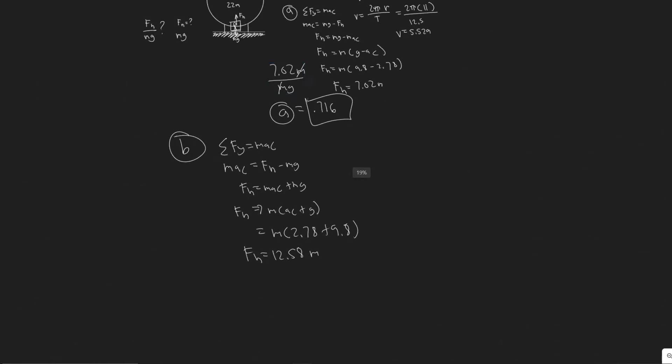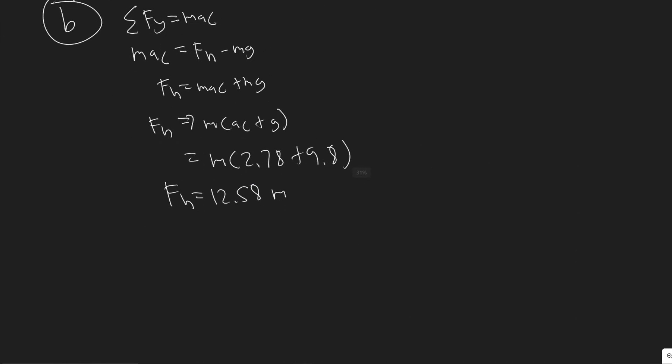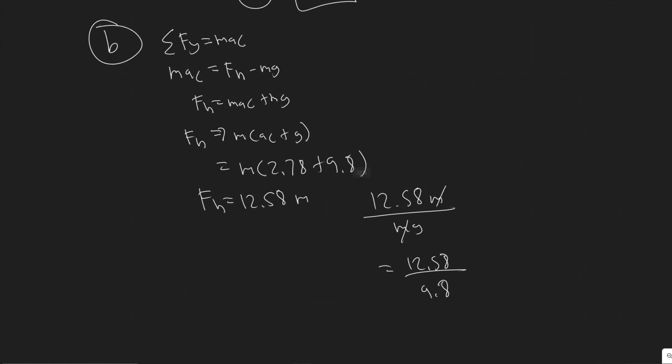And then once again, just do the ratio. So it's going to be 12.58 M over MG. So these cancel once again, and then you're just dividing by 9.8. Doing that you will get it equals 1.28.